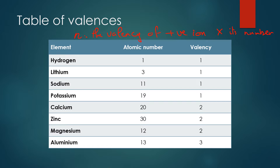For example, suppose we have potassium chloride, sodium carbonate, calcium chloride, aluminium hydroxide, or sodium phosphate. For potassium chloride, we have one potassium with a valency of one from the table, so the small n equals one. For sodium carbonate, sodium has a valency of one but there are two sodium ions, therefore the small n equals two.